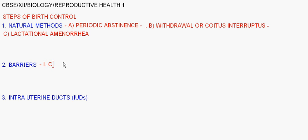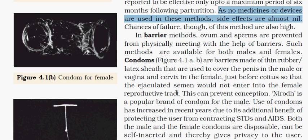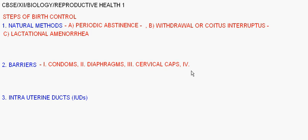Barriers are basically of four types: condoms, diaphragms, cervical caps, and vaults. All of these are barriers. Their function is to prevent fusion of sperm with the ovum by not allowing sperm to be released inside the vagina — that is, they prevent insemination.